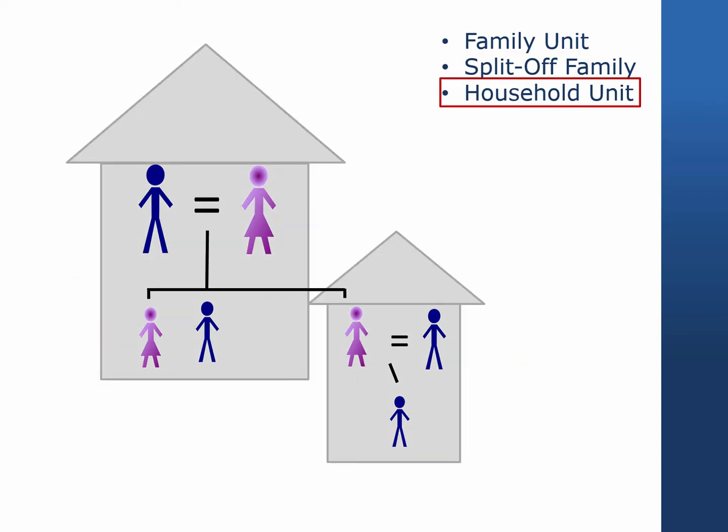The household unit is the physical dwelling where the members of the family unit reside. It can be a house, townhouse, apartment, or room in a rooming house. Not everyone living in a household unit is automatically a part of the family unit. Those who are living temporarily in the household unit or who otherwise do not meet the criteria of relatedness and economic integration are not considered family unit members. A PSID household unit occasionally has more than one family unit.